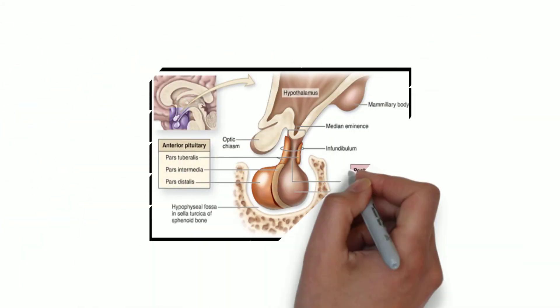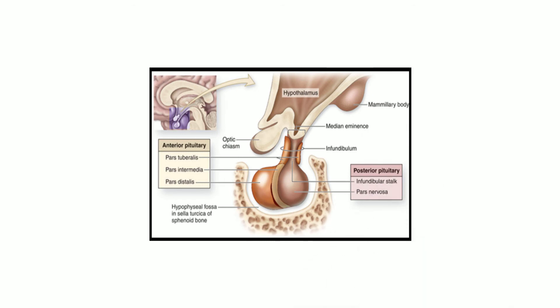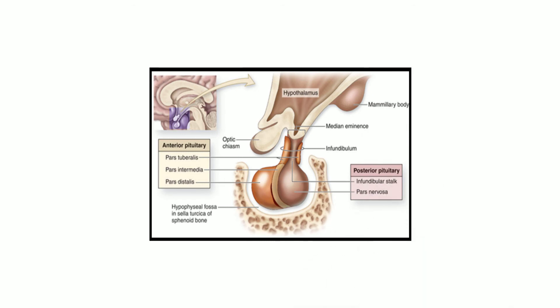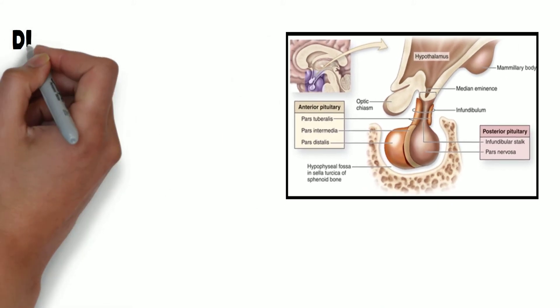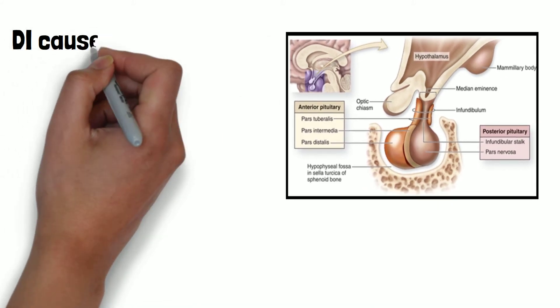Urine output is regulated by antidiuretic hormone, also called arginine vasopressin. ADH is made in the hypothalamus and stored in the posterior pituitary gland, as shown in this diagram, and it also regulates the sensation of thirst.